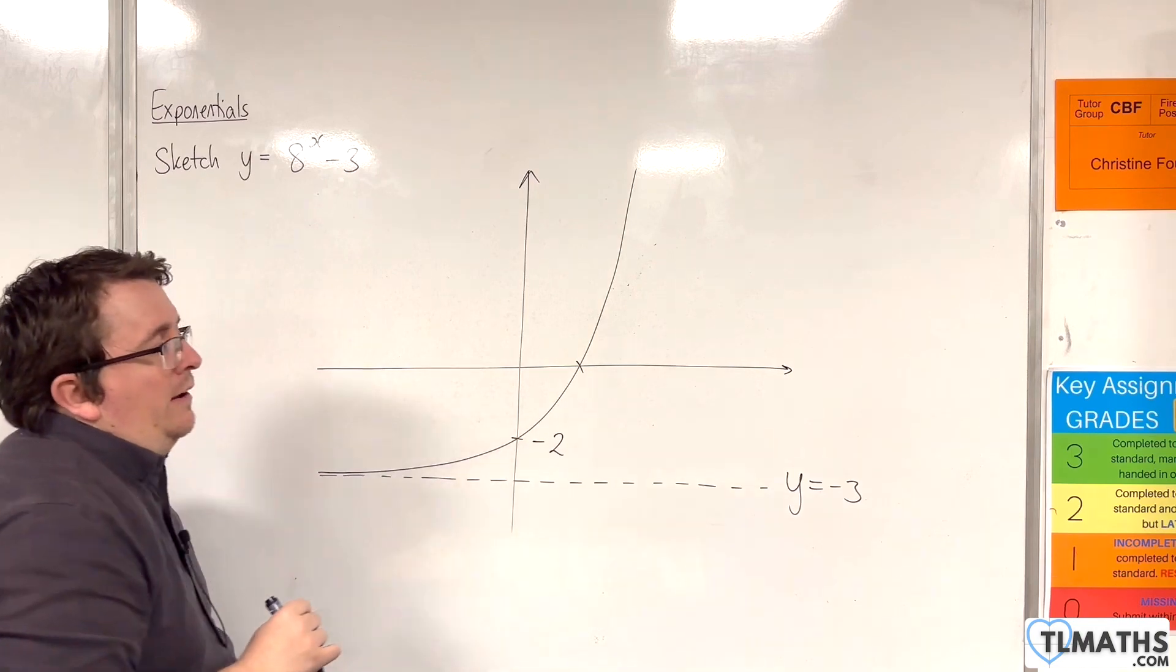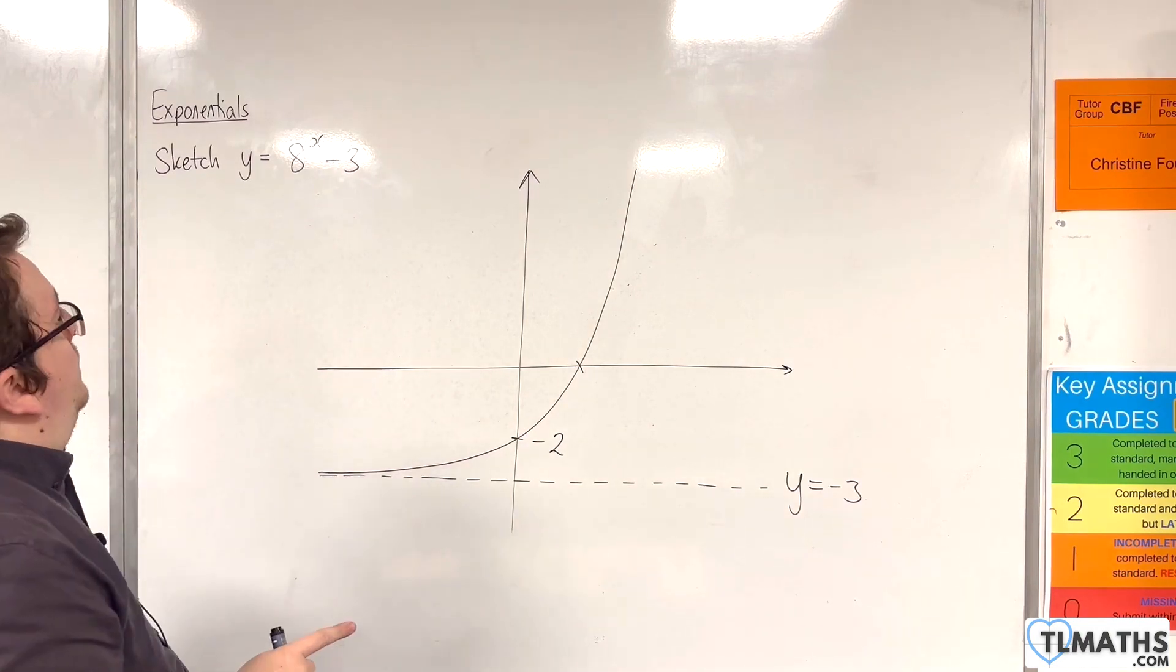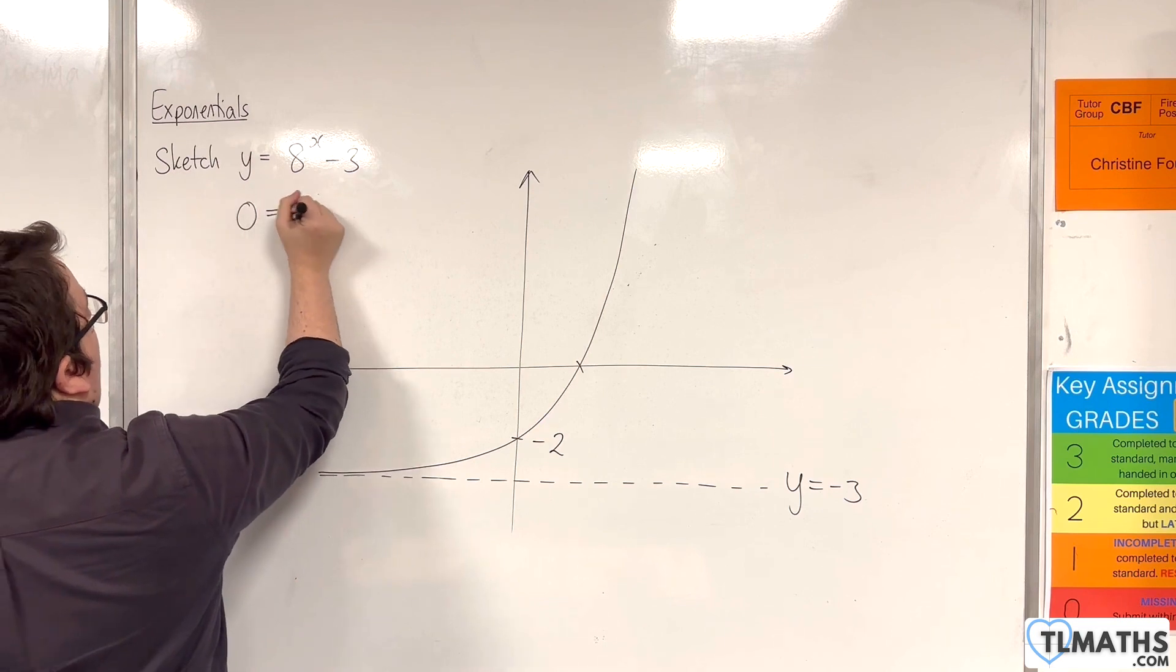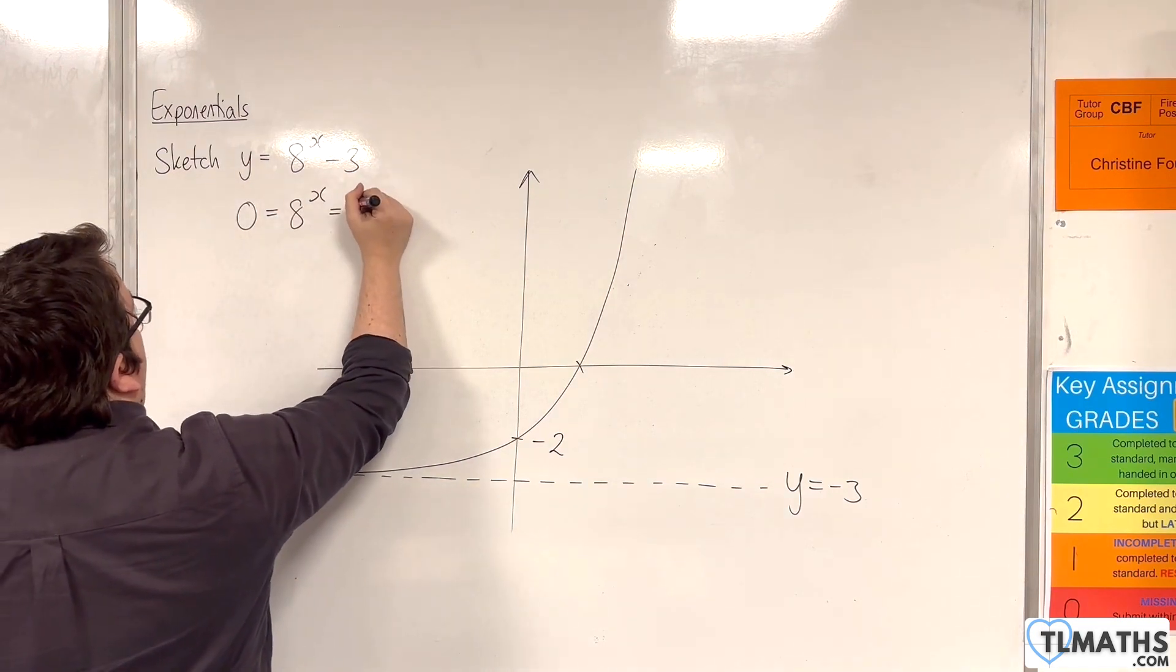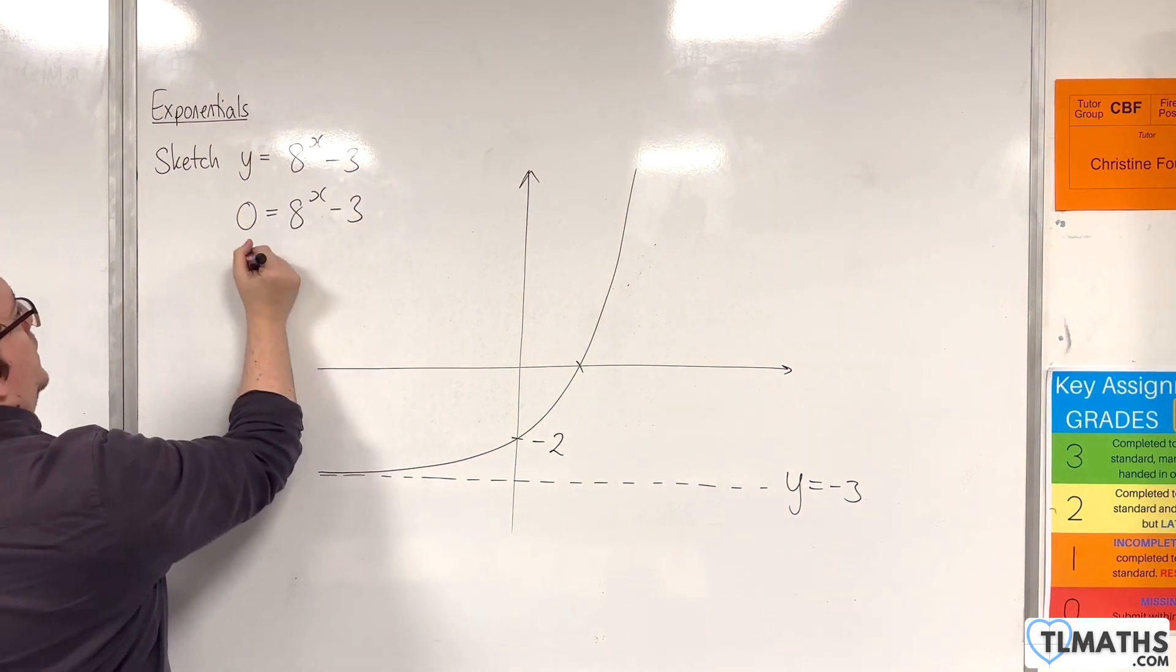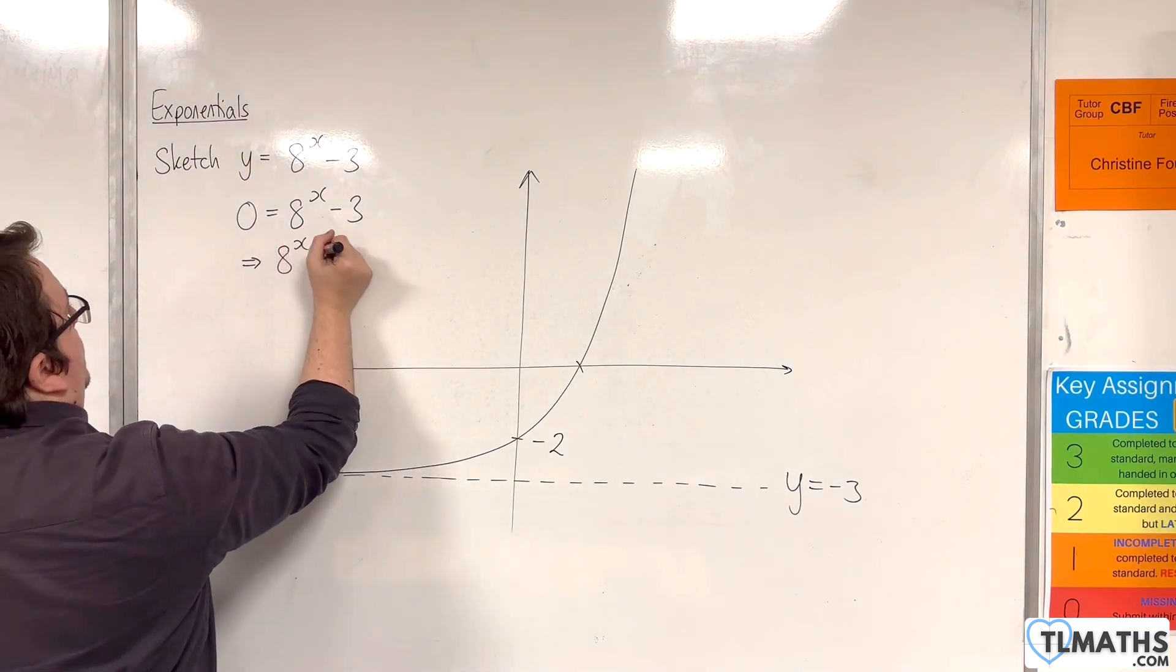Where it crosses the x-axis is a little bit more fiddly for us. That is when y is 0. So when y is 0, we're going to have 0 = 8^x - 3. So 8^x will be 3.